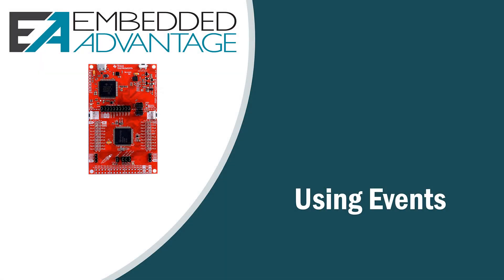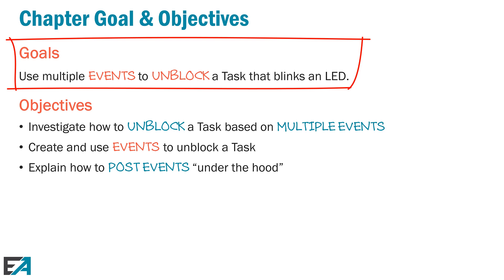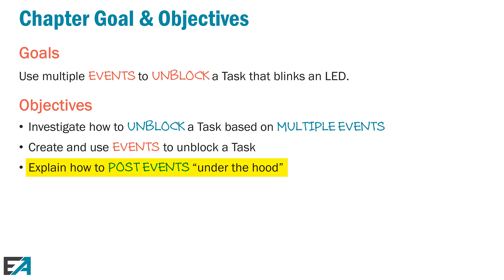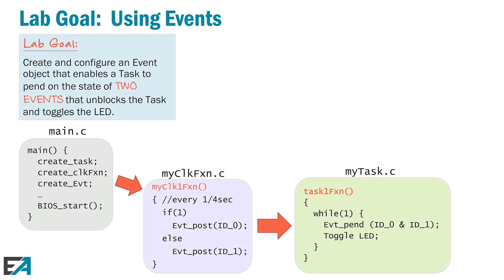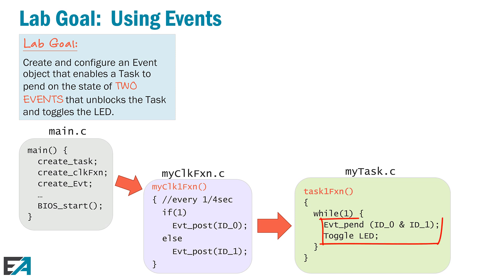Welcome to the last chapter of the workshop fundamentals for TI-RTOS, Chapter 12: Using Events. The goal of this chapter is to learn how to use the events module to unblock a task and blink an LED. We'll investigate what the events module is, what problem it's trying to solve, how to create events to unblock a task, and how to use events with other signaling mechanisms like semaphores. For the lab, we'll take the previous lab using the clock function, create an event object, and every quarter second post one event, and every other quarter second post another event. If both events are true in the task one function, we unblock that task and toggle the LED.